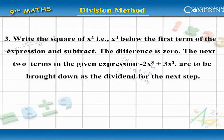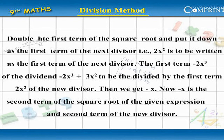Step 3: Write the square of x squared, that is x to the power of 4, below the first term of the expression and subtract. The difference is 0. The next two terms in the given expression, minus 2x cubed plus 3x squared, are to be brought down as the dividend for the next step. Double the first term of the square root and put it down as the first term of the next divisor — that is, 2x squared is to be written as the first term of the next divisor.